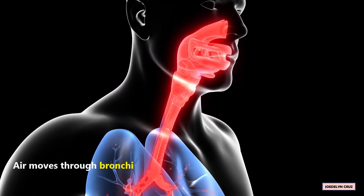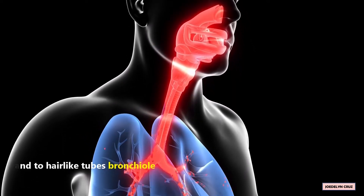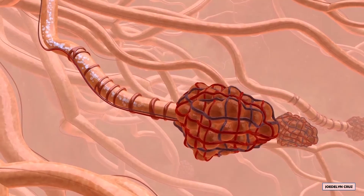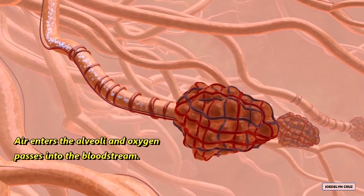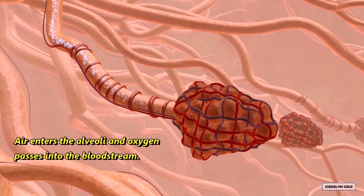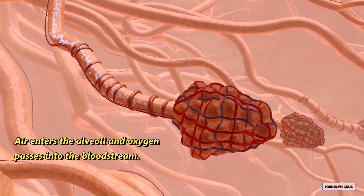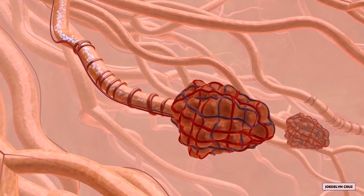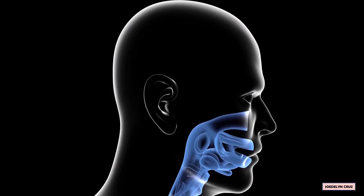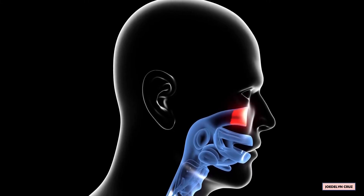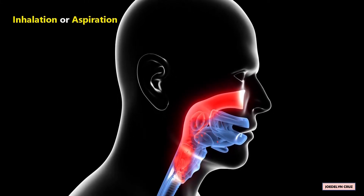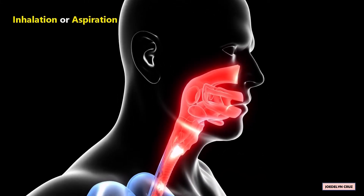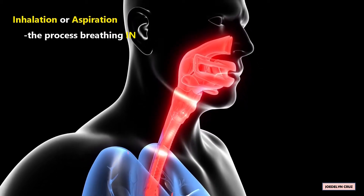Air moves through the bronchi and into hair-like tubes called bronchioles. Air enters the alveoli and oxygen passes into the bloodstream. This process is called inhalation, or aspiration. Inhalation is the process of breathing in.